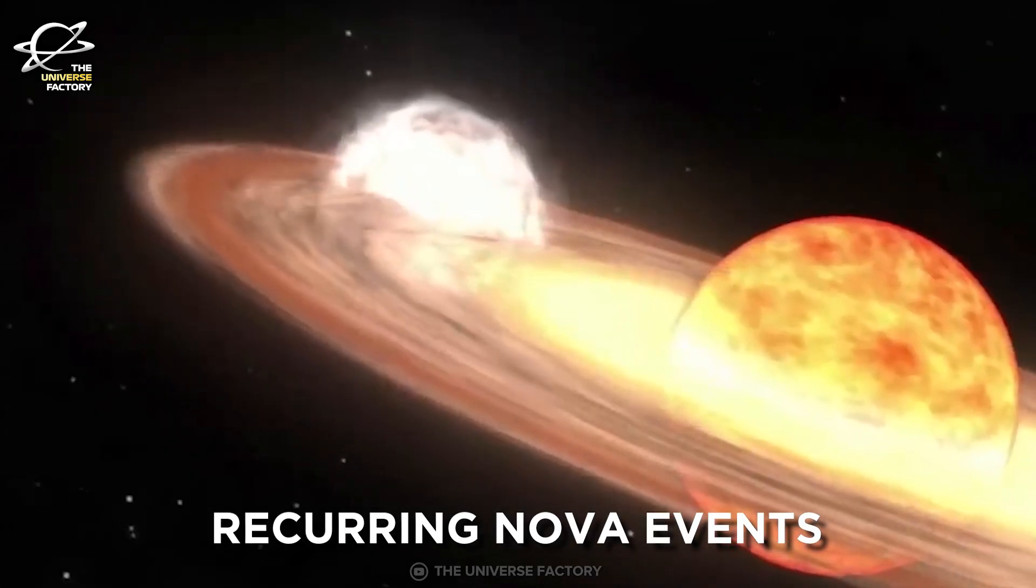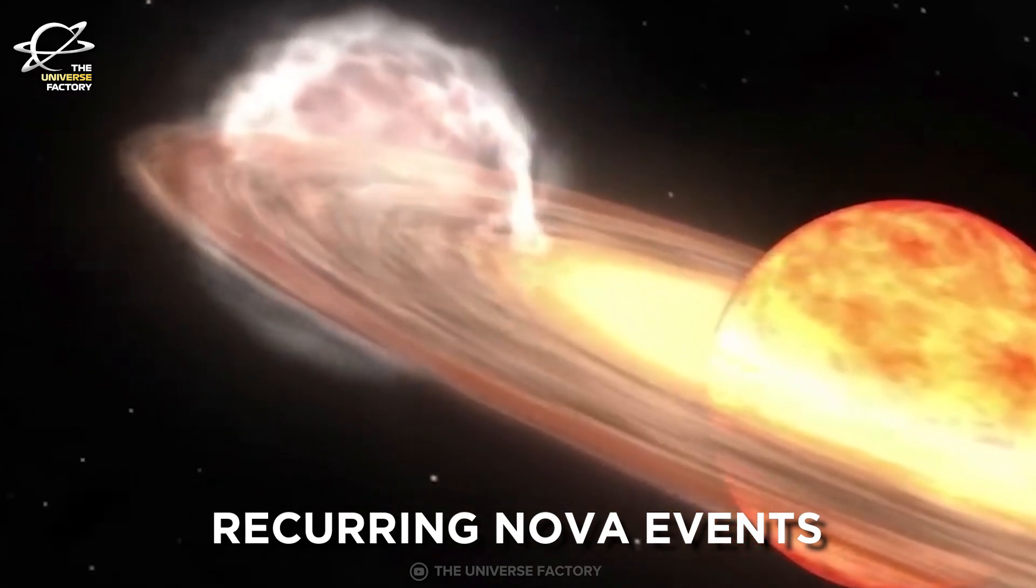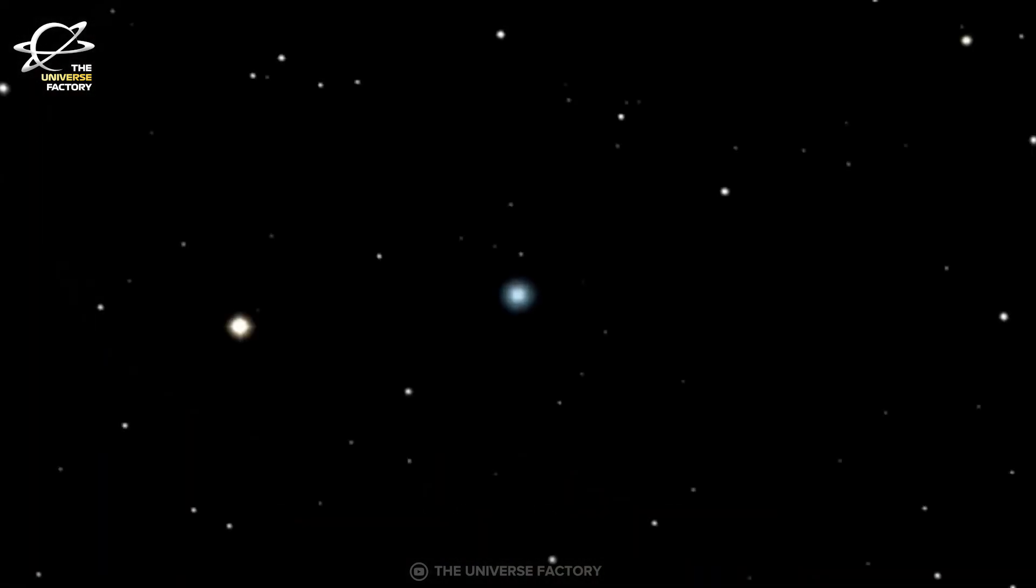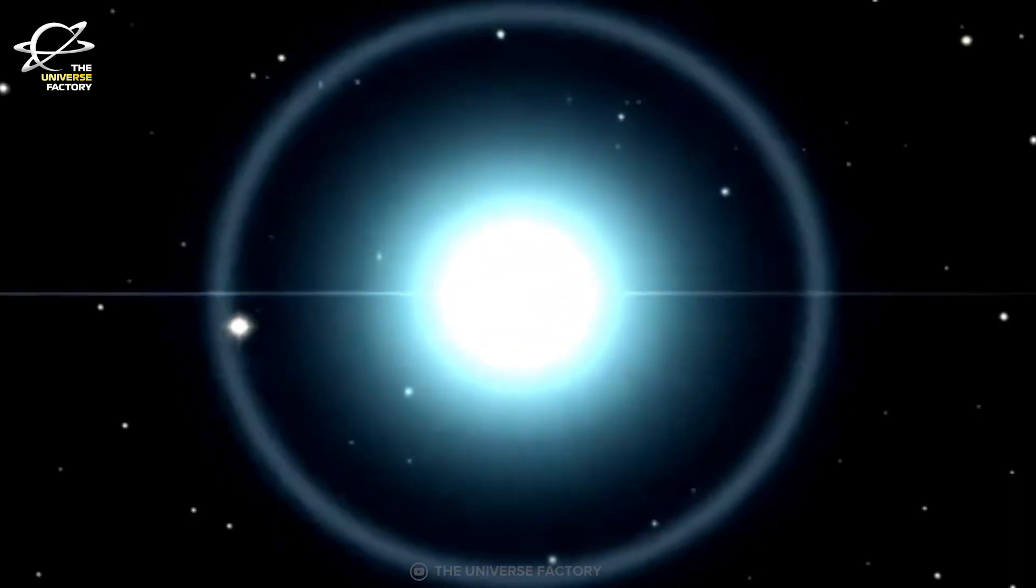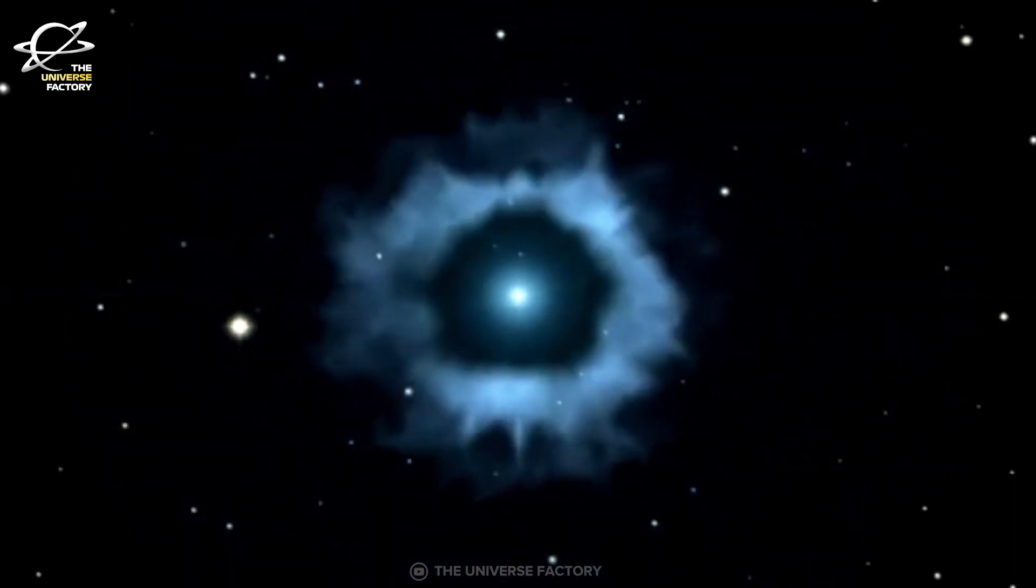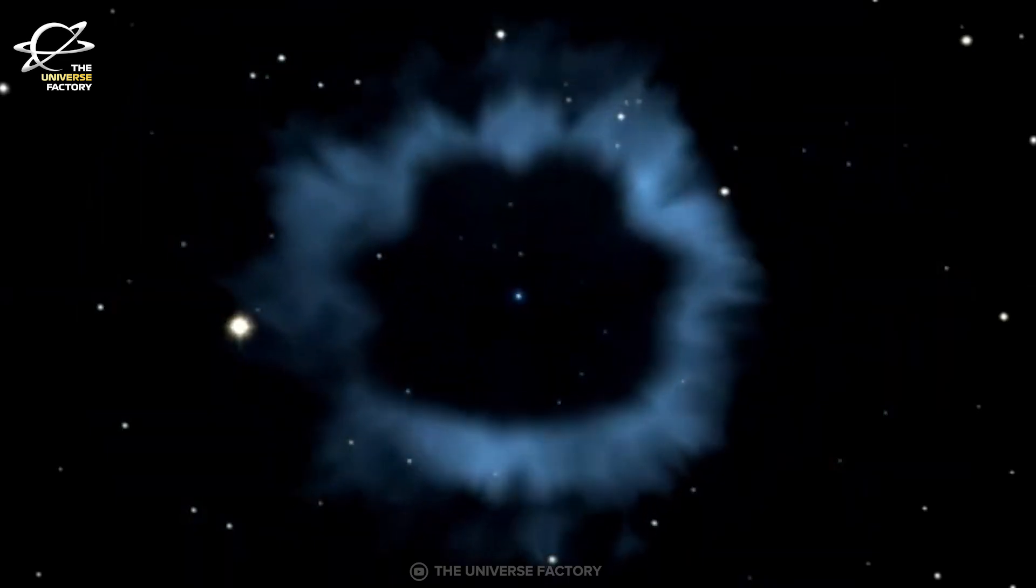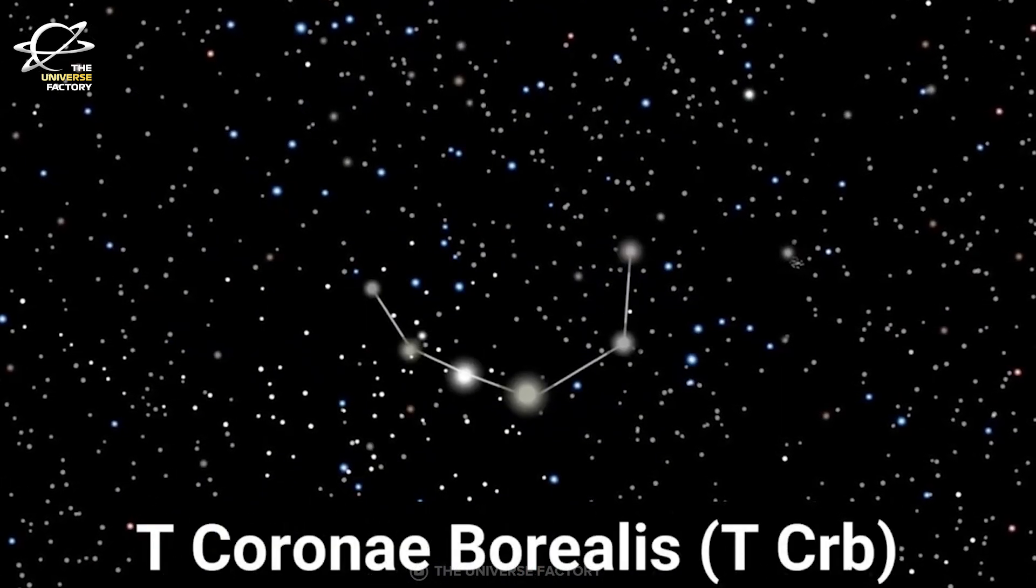These outbursts have become known as recurring nova events. The TCRB white dwarf is usually too dim to see from Earth with the naked eye, but at the peak of its explosion, it will appear as bright as the North Star. You won't need any special equipment to see it.